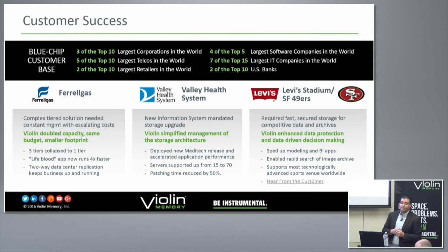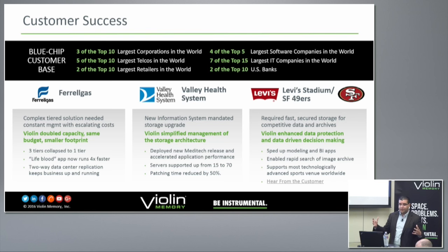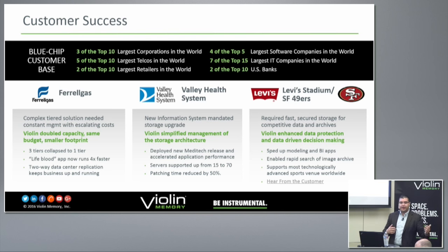Four of the top five largest software companies in the world are using us for source code management, building source code, testing, and continuous regression testing — as part of agile being implemented in a lot of these software companies. Seven of the top 15 largest IT companies in the world are using us for different application workloads. And two of the top 10 US banks are using us — think of real-time credit card fraud detection: you swipe your credit card, you immediately get a message on your phone. Those type of real-time services all require very fast transactional processing on the storage back end.